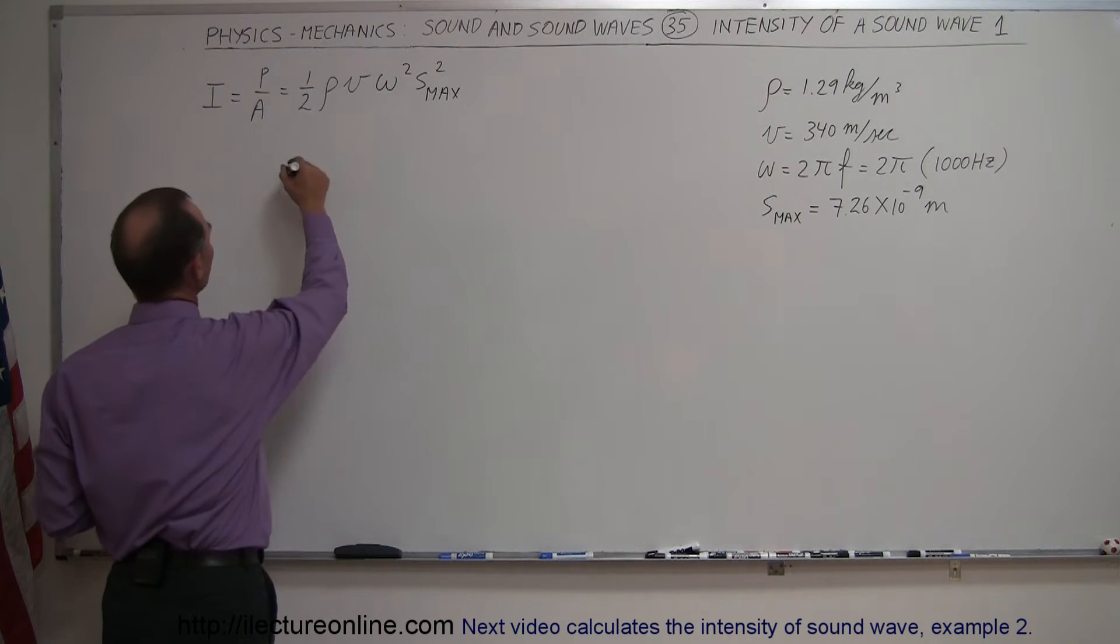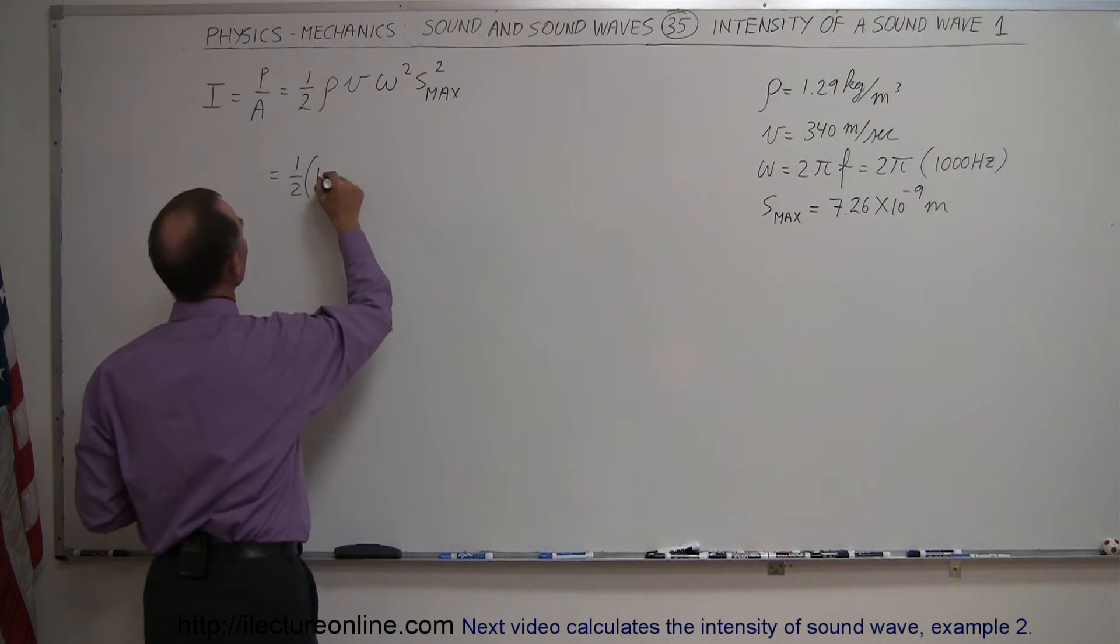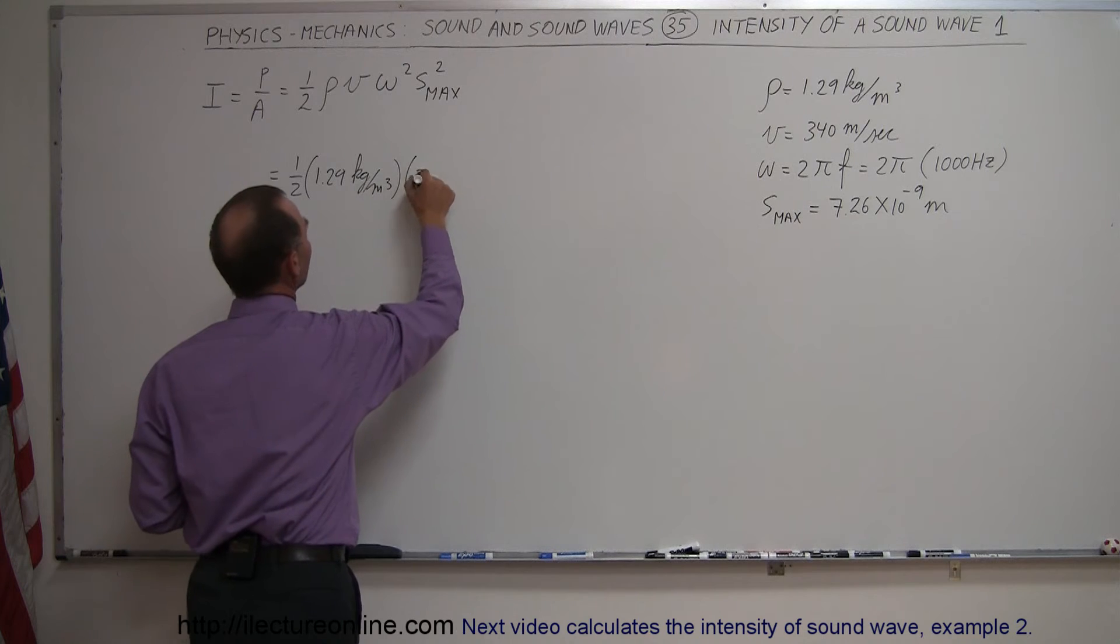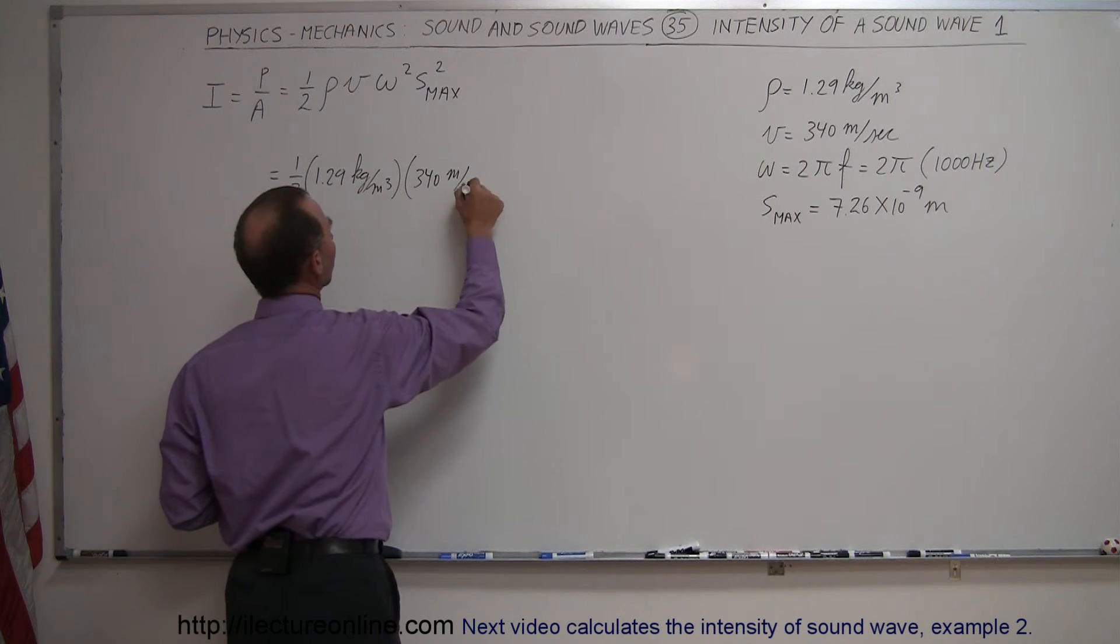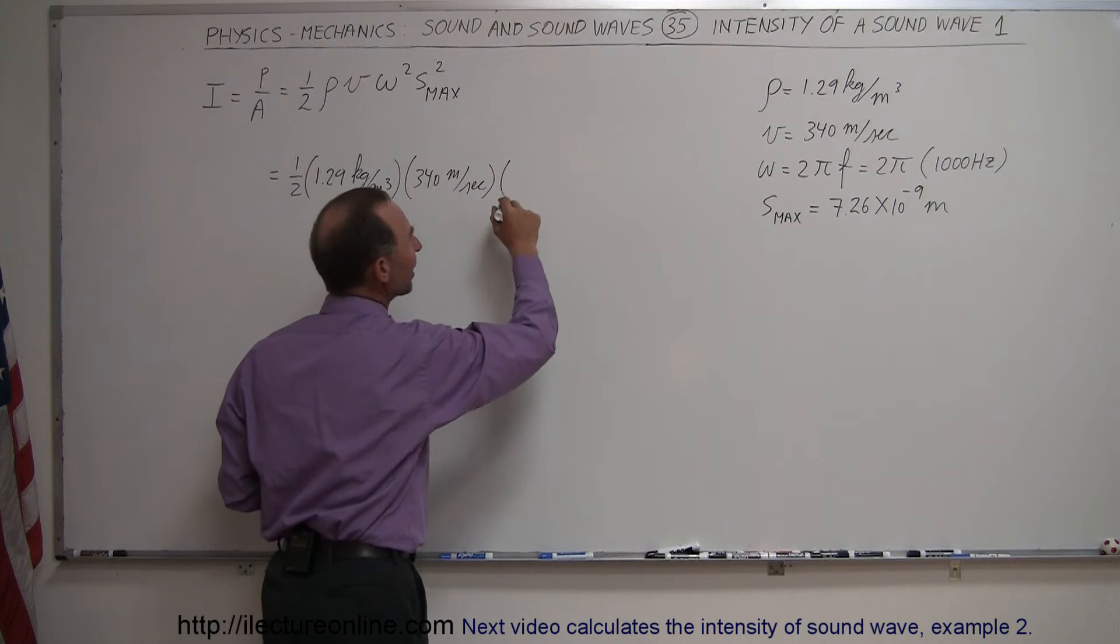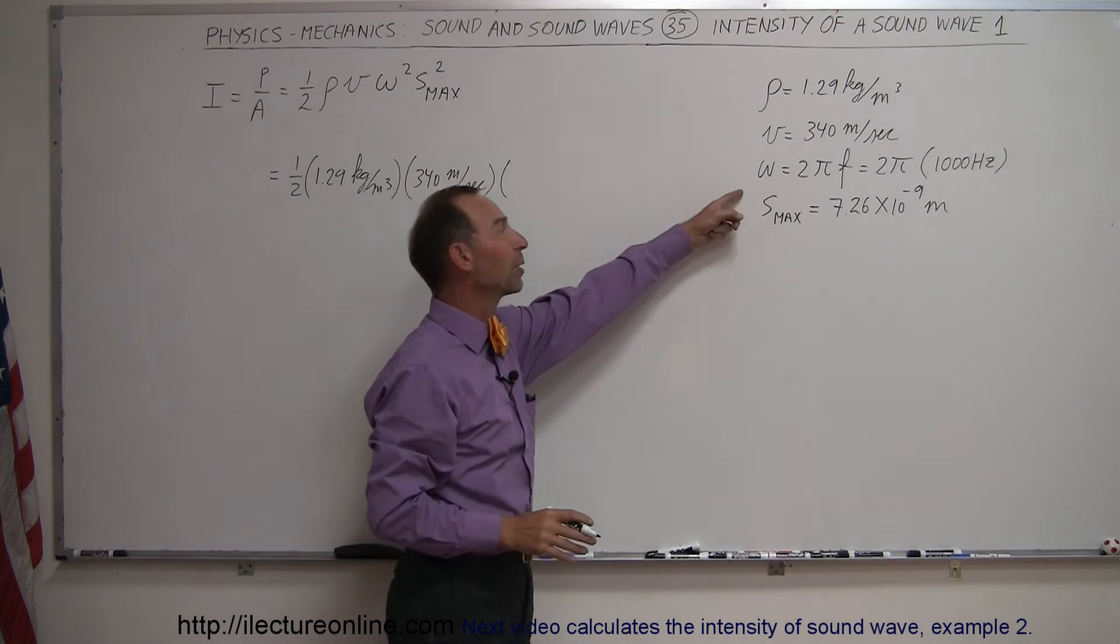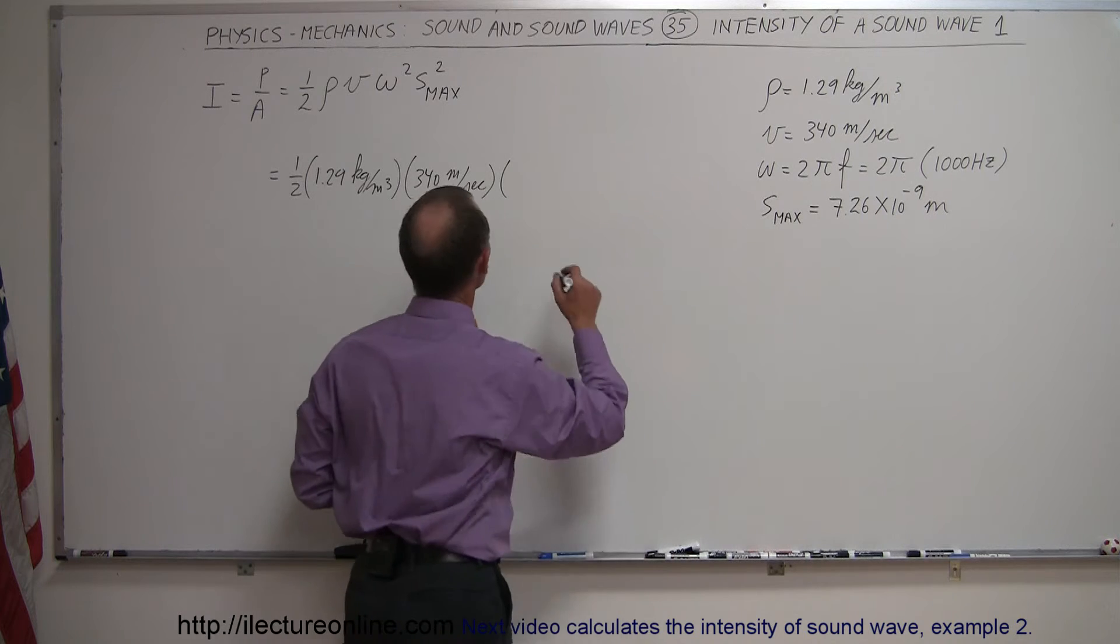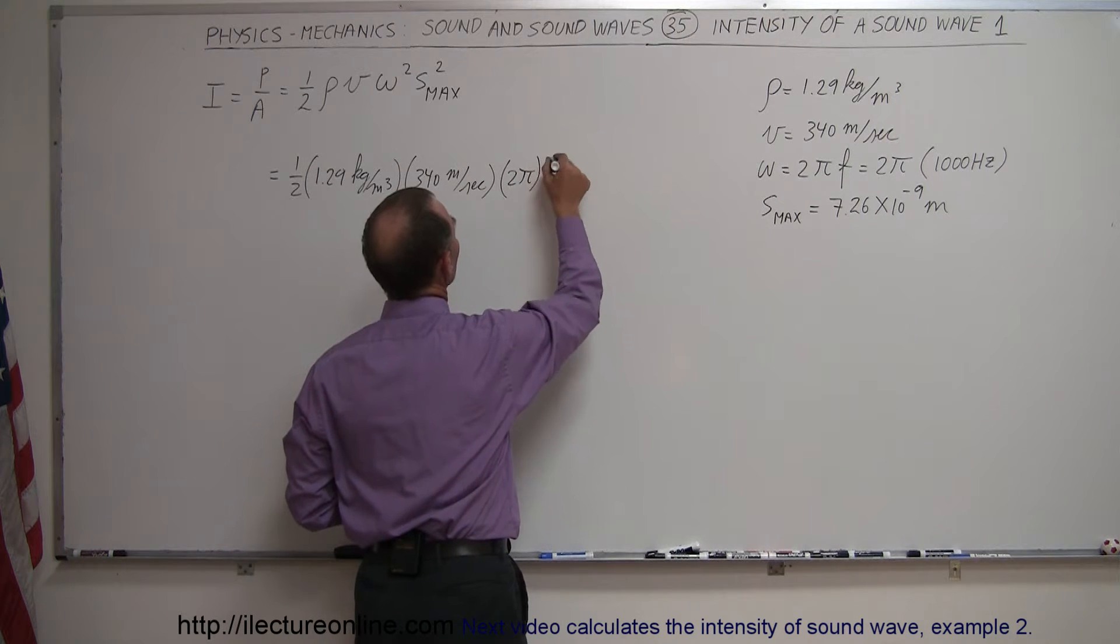So I wrote them down right here. We have one half times the density which is 1.29 kilograms per cubic meter, times the velocity, 340 meters per second, times the frequency. And of course as the angular frequency, you have to multiply the normal frequency by 2 pi, so we have 2 pi times a thousand Hertz.